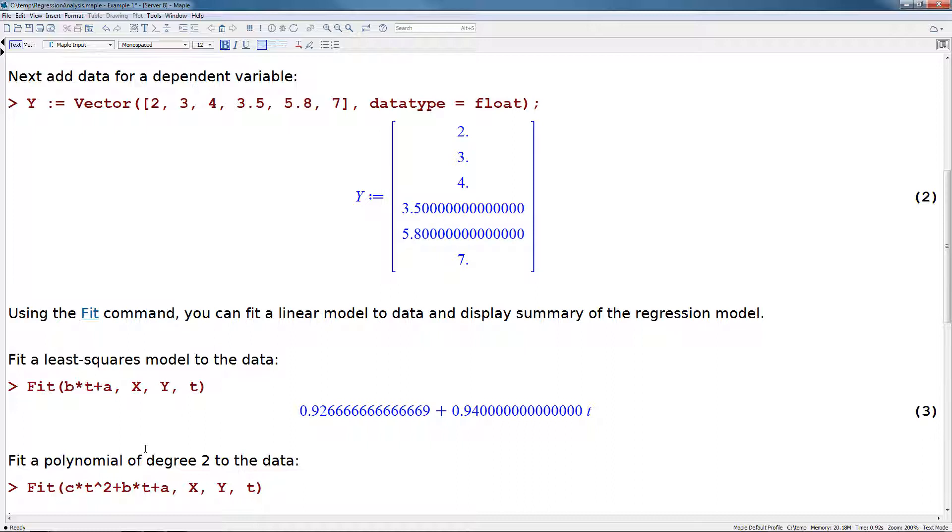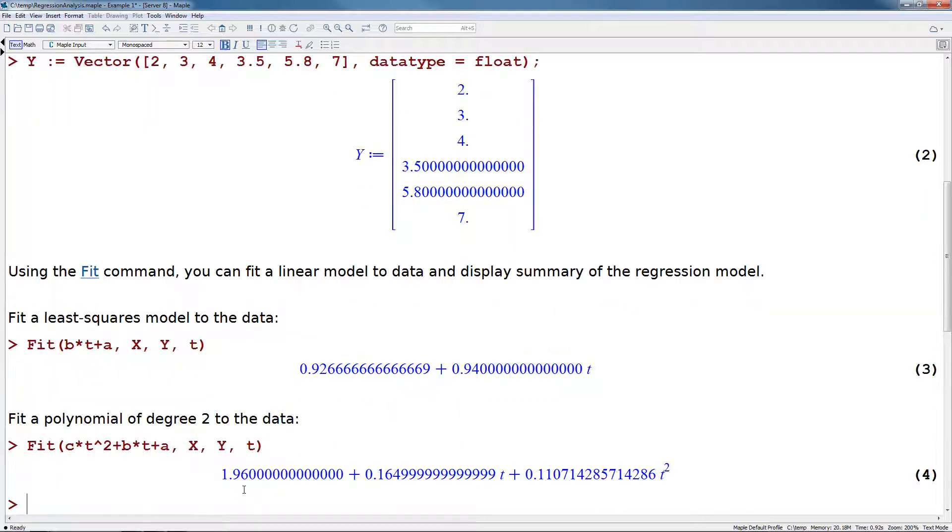We can fit a polynomial of degree 2 to the data as well by specifying that as our first argument. We would just add in c times t squared plus b times t plus a. Again, pressing return will give us back our model expression.